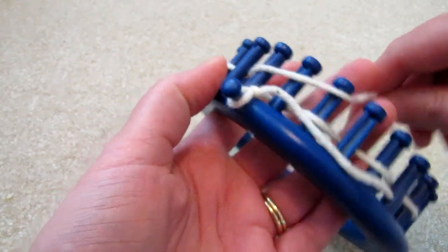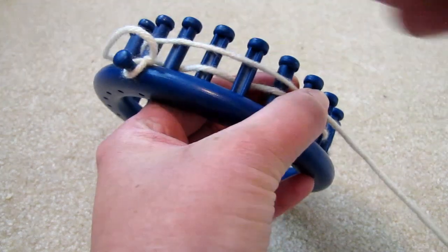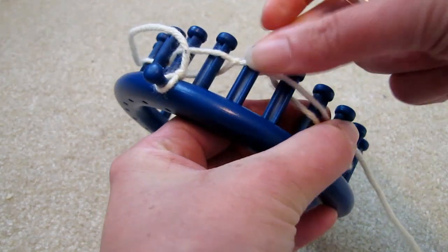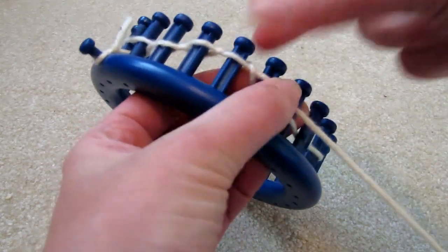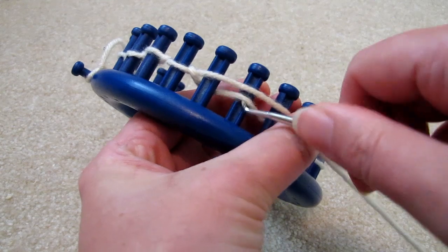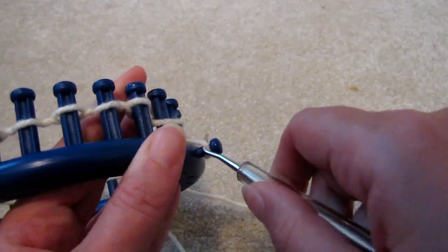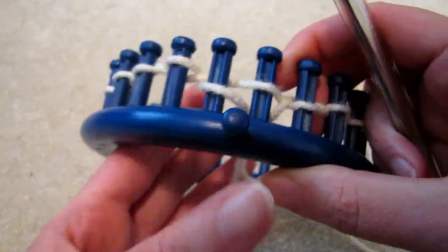And then start knitting off all the pegs that have a loop. They're all done. So we might as well remove this from the holding peg towards the inside.